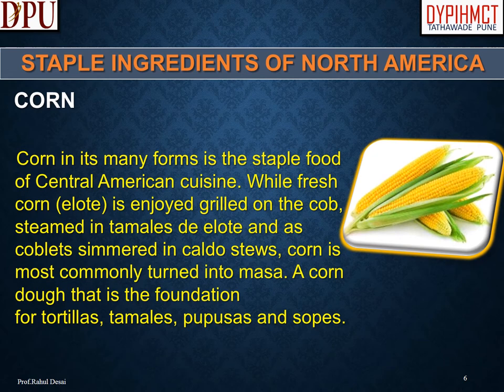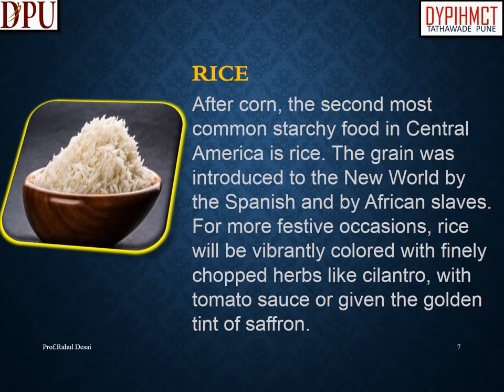Corn in its many forms is the staple food of Central American cuisine. While fresh corn is enjoyed grilled on the cob, steamed in tamales, and as coblets simmered in caldo stews, corn is most commonly turned into masa — the foundation for tortillas, tamales, pupusas, and soaps. After corn, the second most common starchy food in Central America is rice, introduced to the New World by the Spanish and by African slaves. For festive occasions, rice is colored with herbs like cilantro, tomato sauce, or saffron.